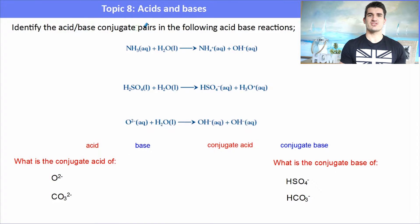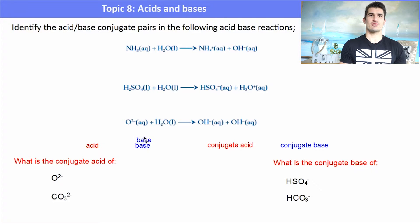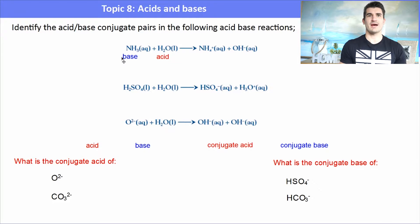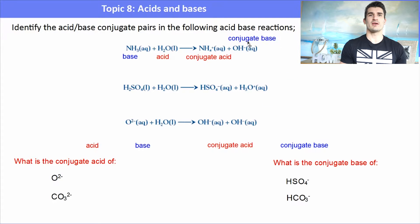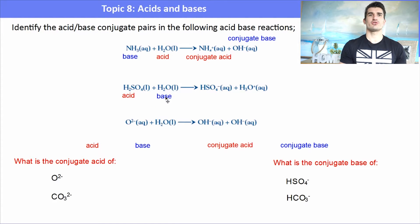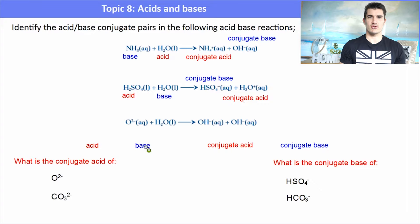Here are more examples for determining conjugate pairs. For NH₃: it accepts a proton from water, so NH₃ is the base and water is the acid; NH₄⁺ is the conjugate acid and OH⁻ is the conjugate base. For sulfuric acid acting as an acid donating a proton to water: HSO₄⁻ is the conjugate base and H₃O⁺ is the conjugate acid.